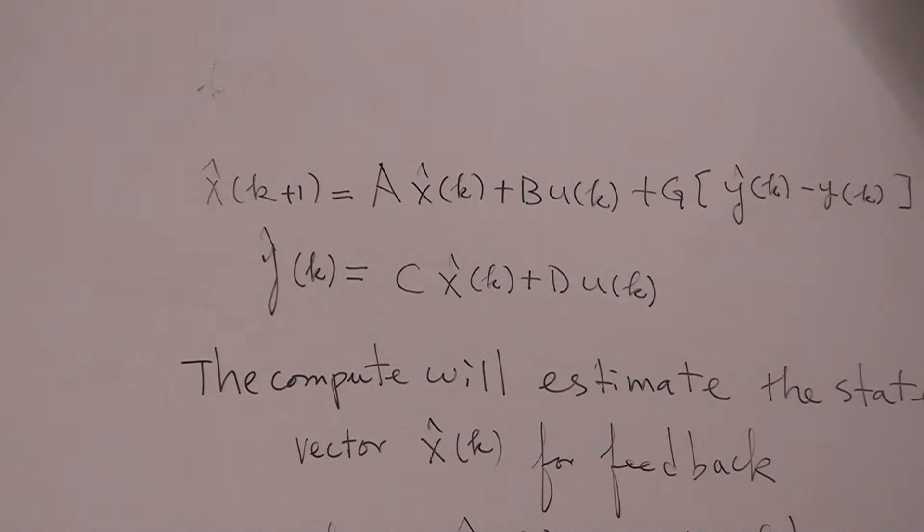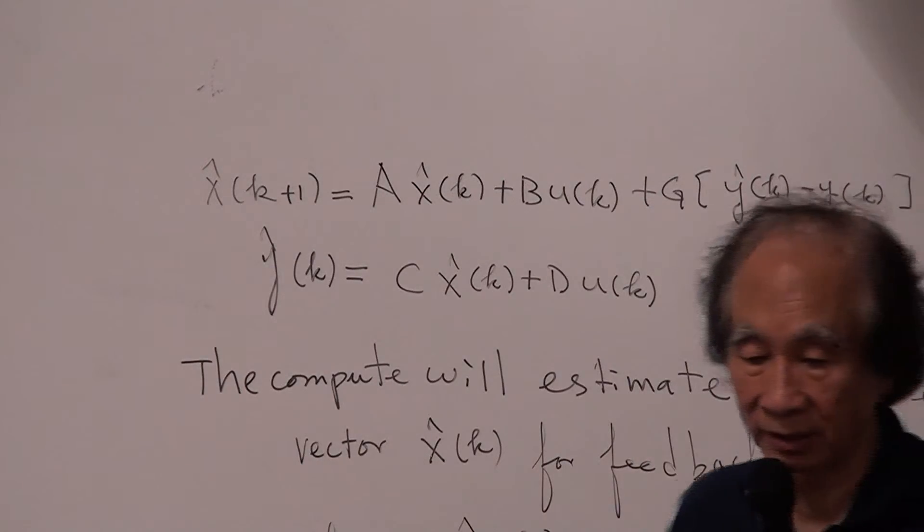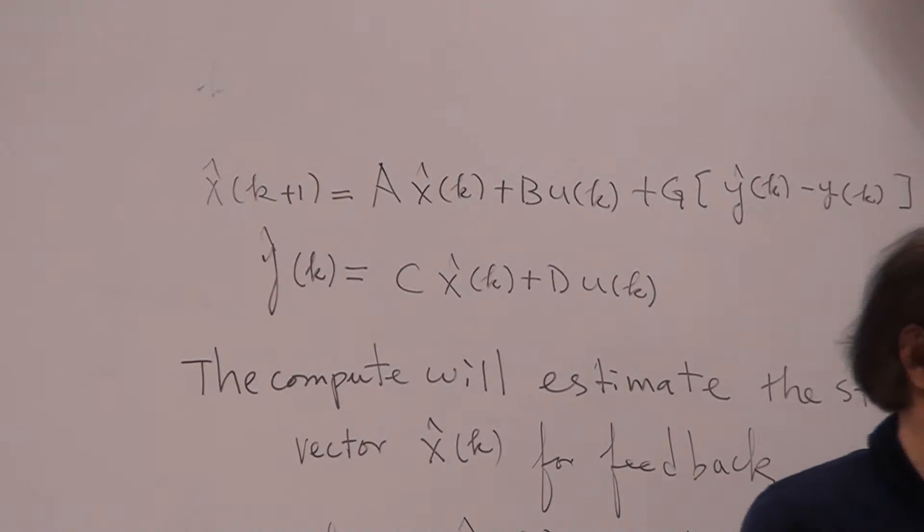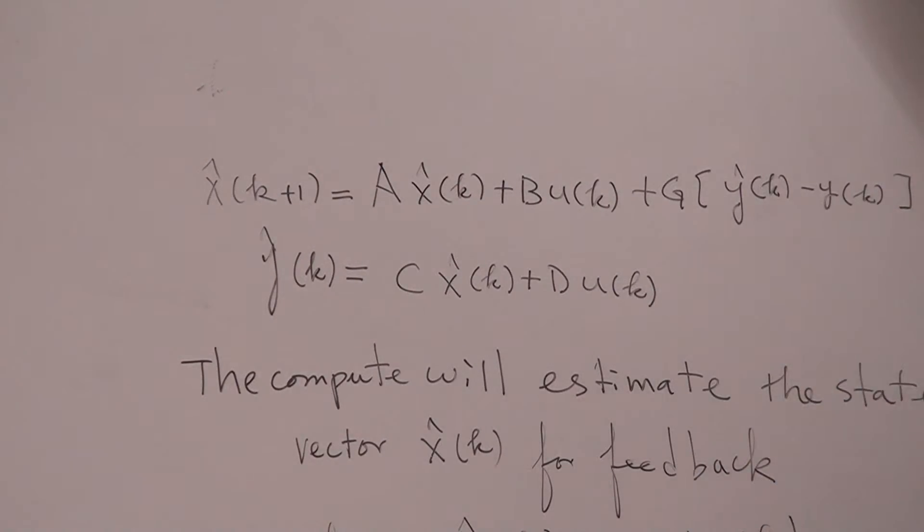And there's a comment here: the G observer can be directly identified from data. If you learn system ID, how can we compute G? There are many ways to compute G. You can use pole placement technique to compute G, or you can use a lot of different techniques. And also you can identify G from your data if you know how to do system ID. Some system ID technique will identify A, B, C, D plus G. So you can use those to do your state estimations.